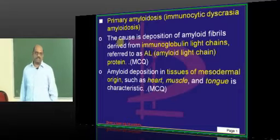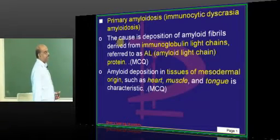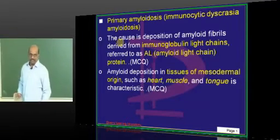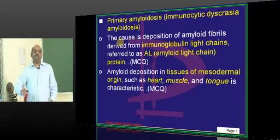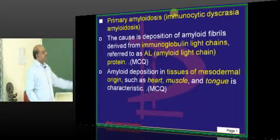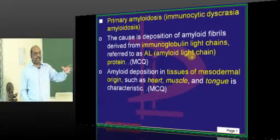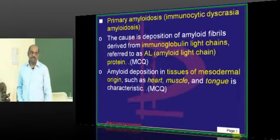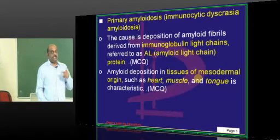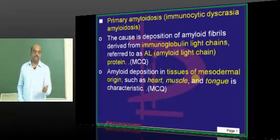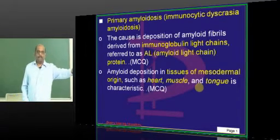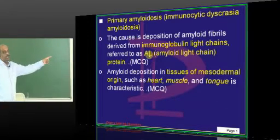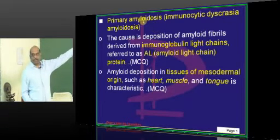The different forms of amyloidosis include primary and secondary amyloidosis. Primary amyloidosis is also called immunocytic dyscrasia-associated amyloidosis. Here, immunoglobulin light chains are responsible for amyloid formation. Primary amyloidosis means you think of immunoglobulin plasma cell dyscrasias. It is the AL type — amyloid light chain protein — which is responsible for primary amyloidosis.